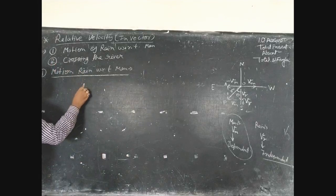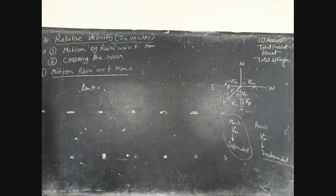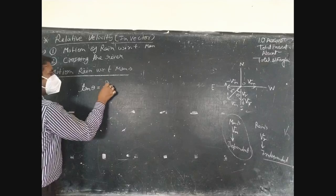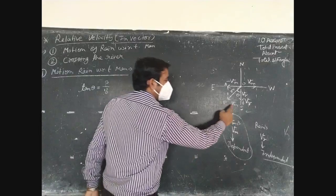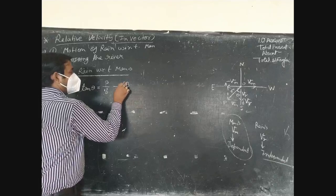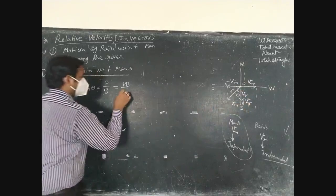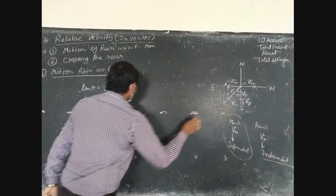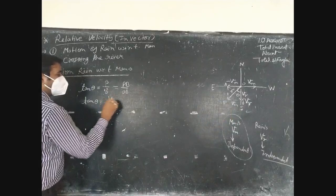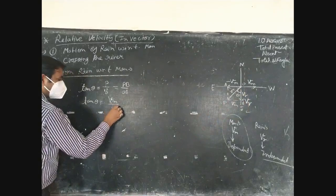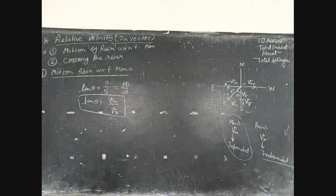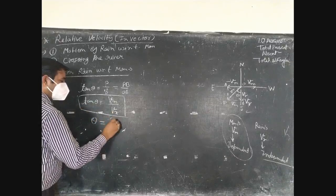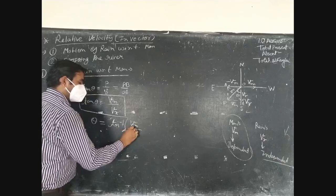The direction of holding the umbrella by the man to protect himself from rain is: tan theta equals perpendicular upon base. Perpendicular is Pb equals Vm, and base is Ob equals Vr. So tan theta equals Vm upon Vr, and theta equals tan inverse of Vm upon Vr.